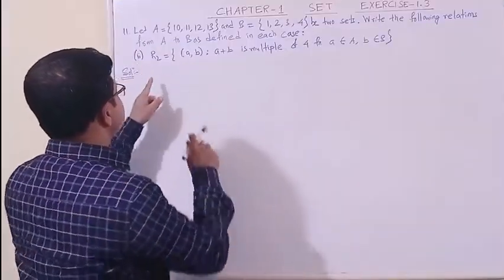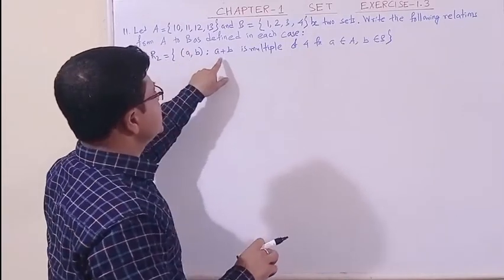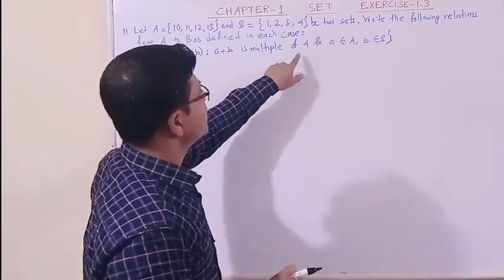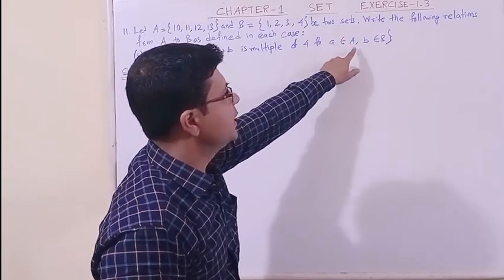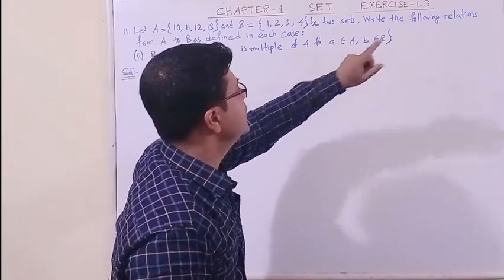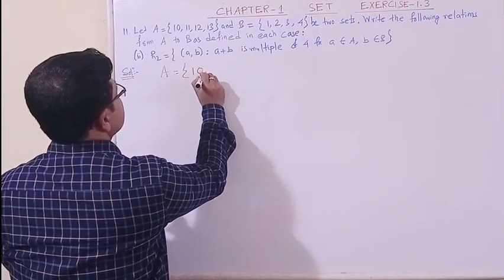Now dear students, we have taken the second part of it. In the second part, this is the relation. Relation is the ordered pair (a, b) such that a plus b is a multiple of 4 for the element a belongs to set A and the element b belongs to set B. At first, again, let us note down the set. The elements are 10, 11, 12, 13 and the set B.